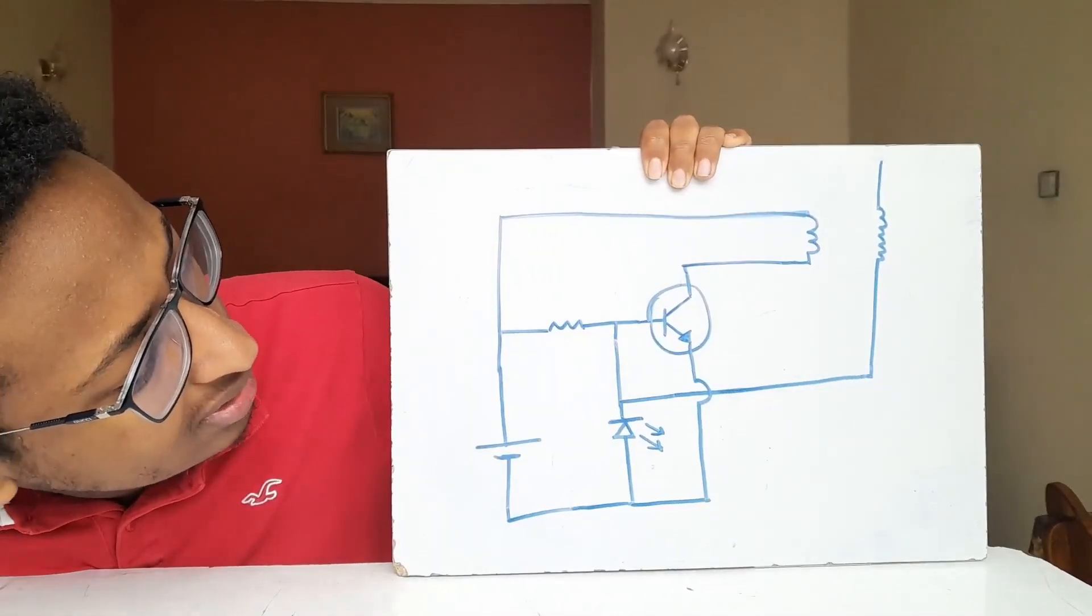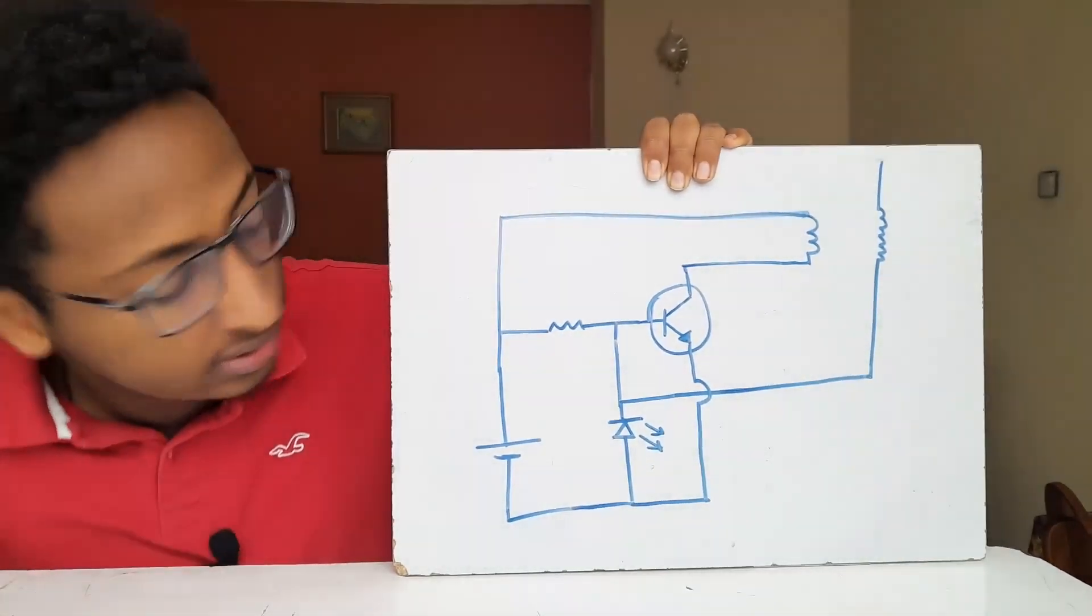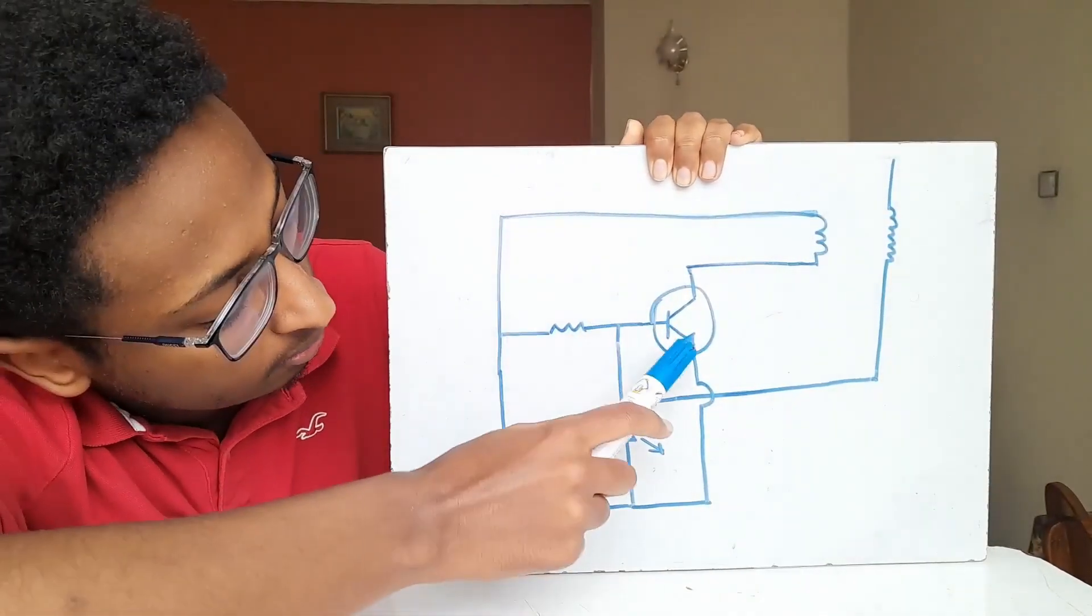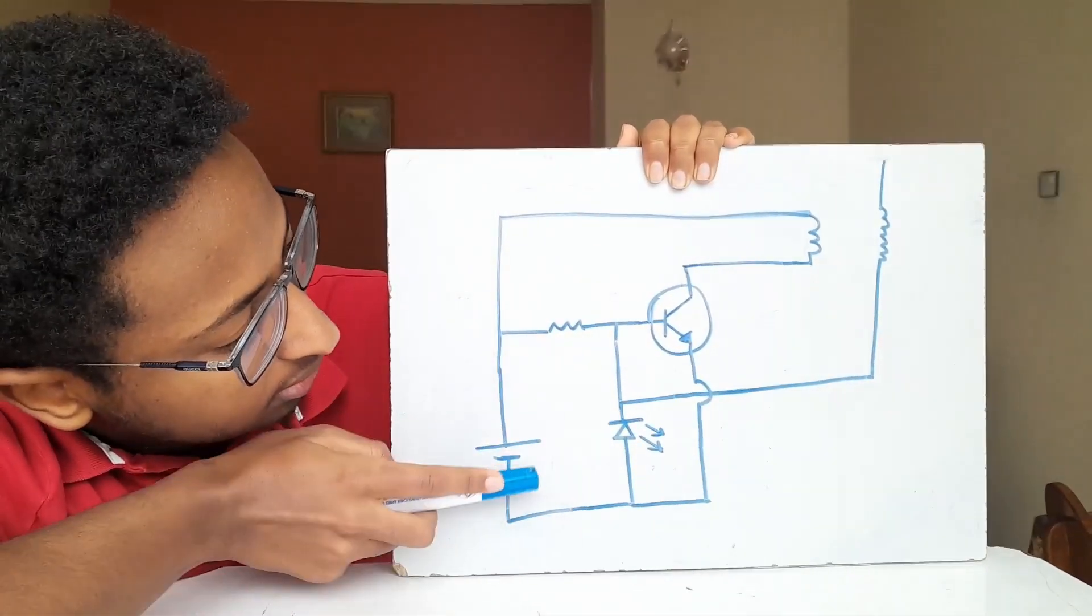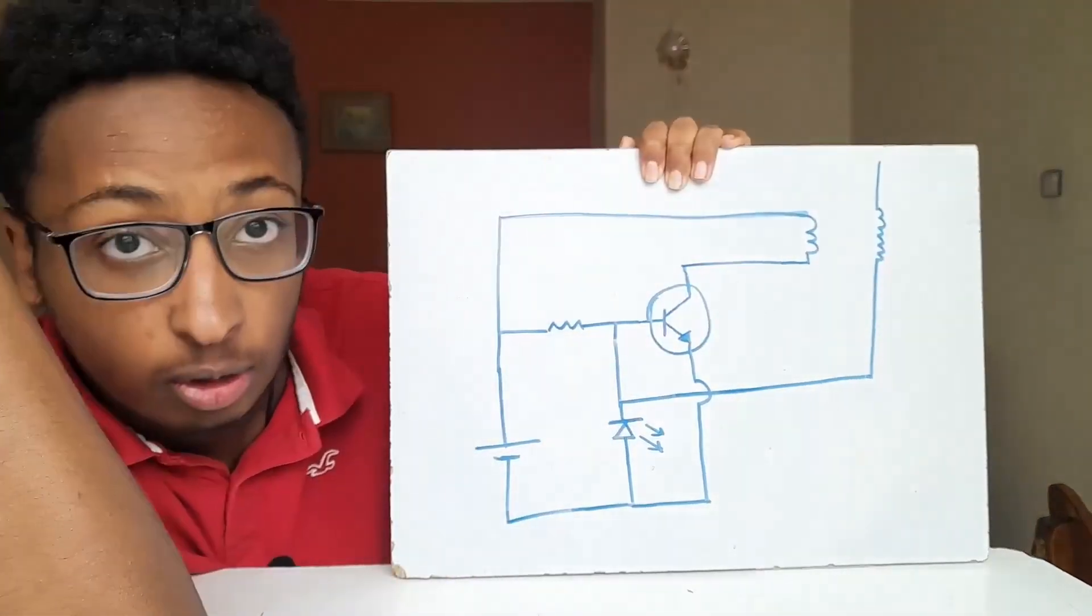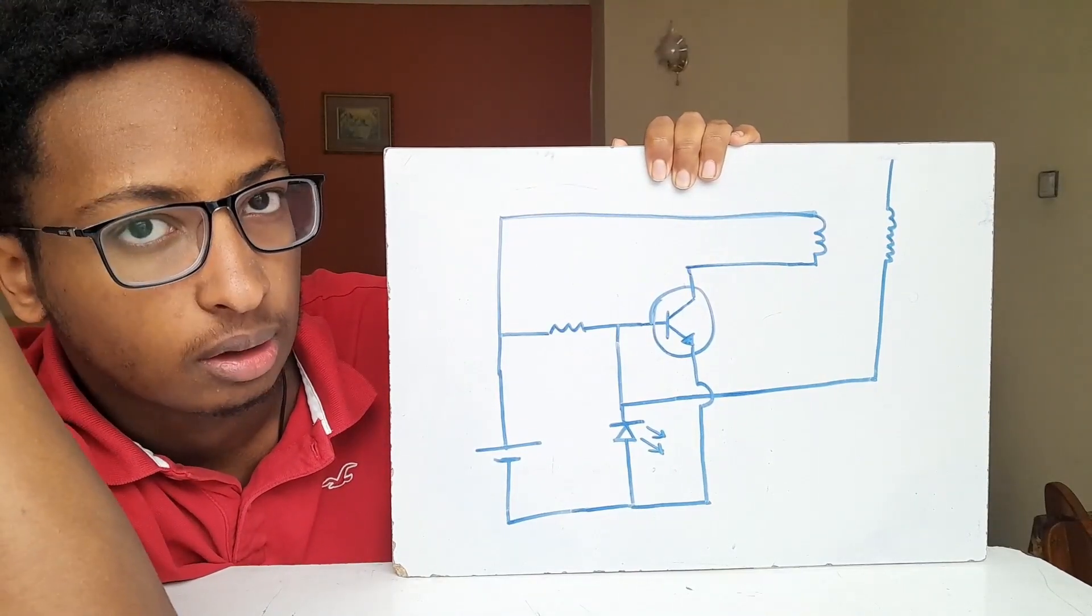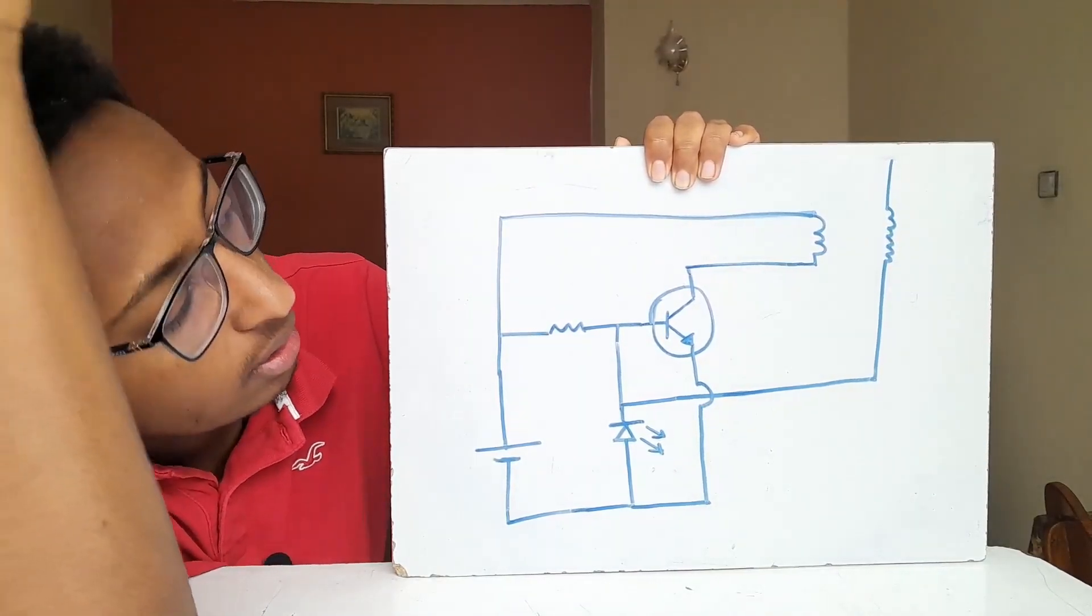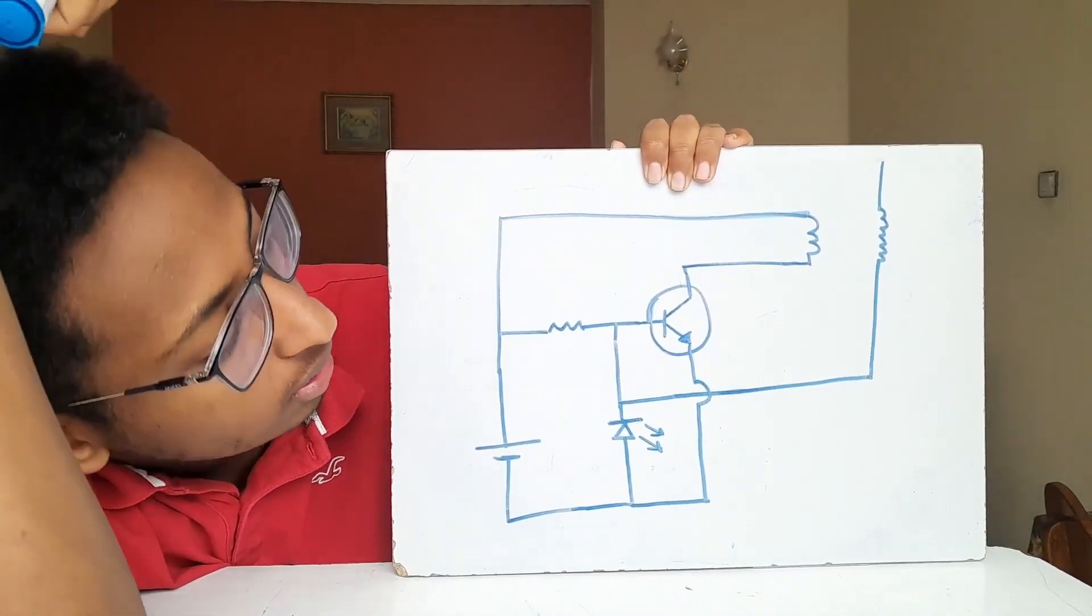Now before I turn it on, let's just see the quick brief of this schematic. There is a transistor right here, an LED, a resistor, a power source, and this is the primary and this is the secondary coil. But the primary coil usually consists of a fewer number of turns, usually less than 10 turns. And this one is the secondary which may be in hundreds of turns.